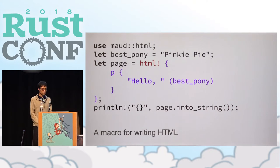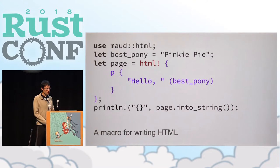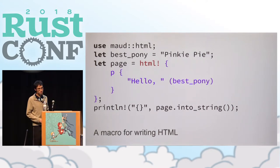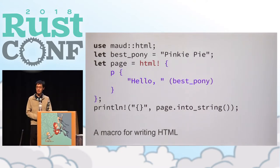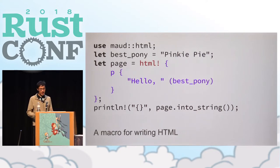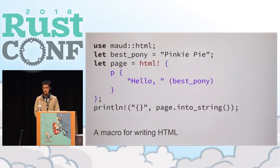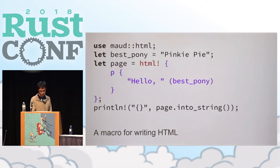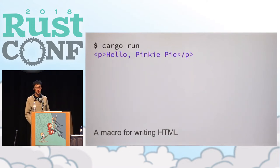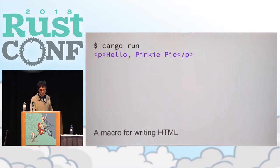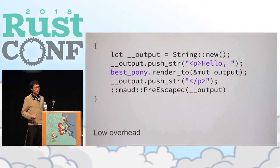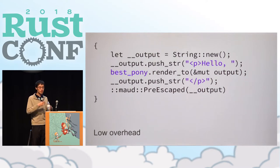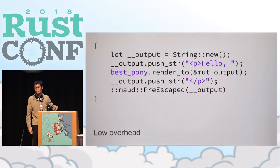It calls a macro called HTML, and inside of that macro call is completely custom syntax — the Rust compiler itself doesn't know what this particular syntax means, the thing in purple. But what Maud will do is take this piece of syntax and convert it into normal Rust code that the rest of the compiler will understand. This is the output when you run that program: the string "hello pinky" within paragraph tags. If you were to run something like cargo-expand to view the code that Maud generates, you would see something similar to this.